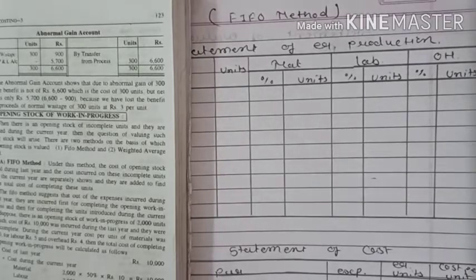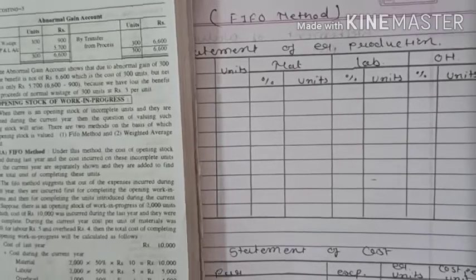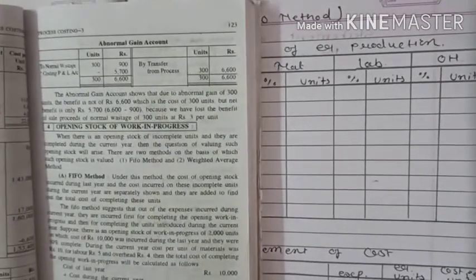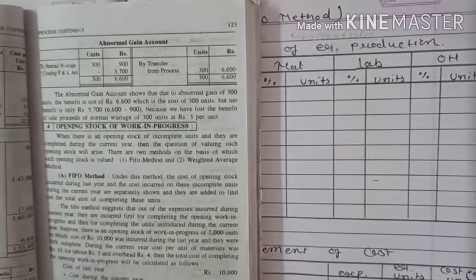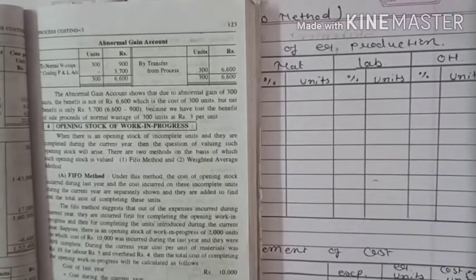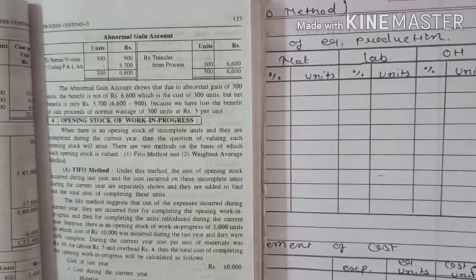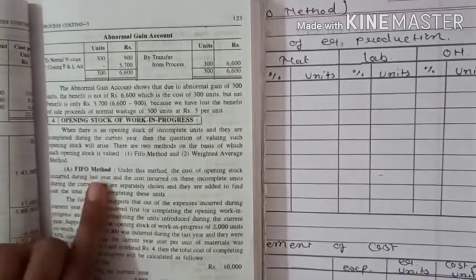Hello everyone. In today's Process Costing 3 account lecture, we are focusing on the opening stock. On the basis of the opening stock of work in progress, there are two types of methods: the FIFO method and the weighted average method. We are first solving the FIFO method.